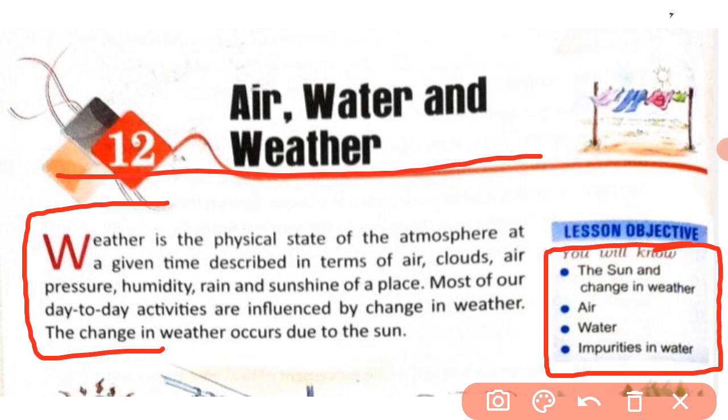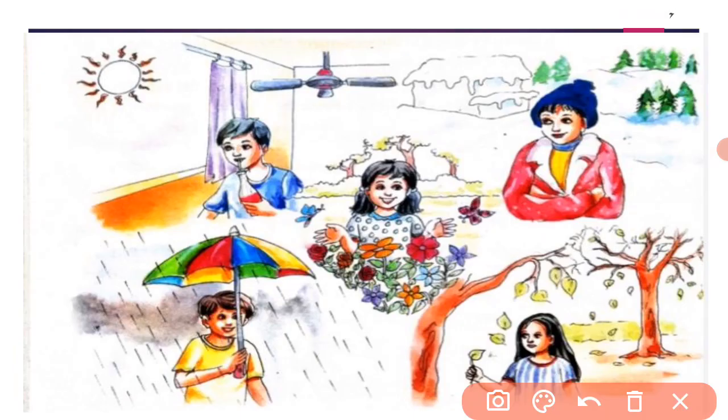Most of our day-to-day activities are influenced by change in weather. The change in weather occurs due to the sun. Sun ki wajah se weather mein change aata hai — most of our daily activities are affected by changes in weather caused by the sun.